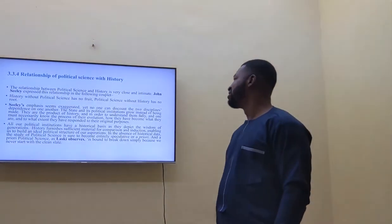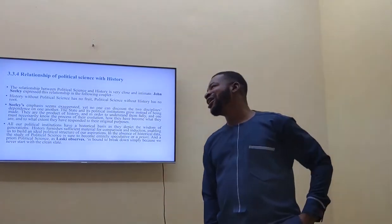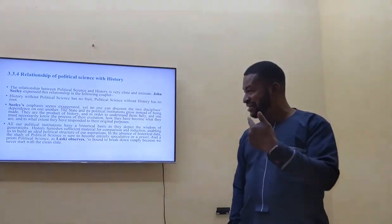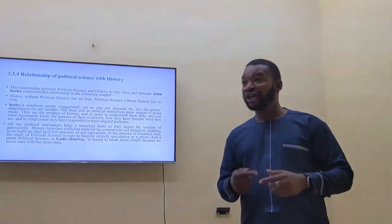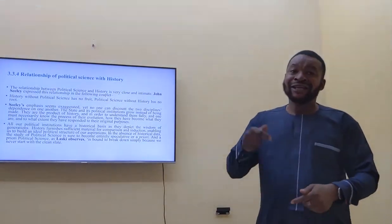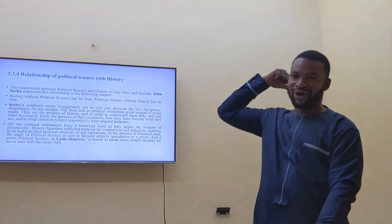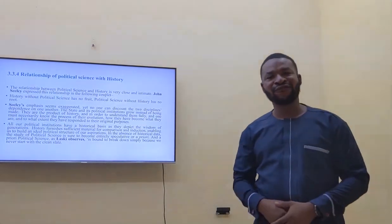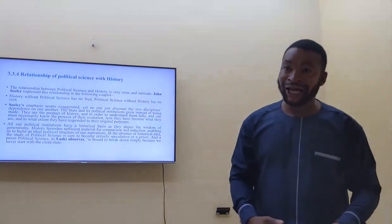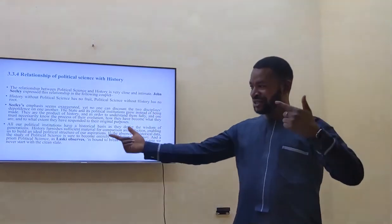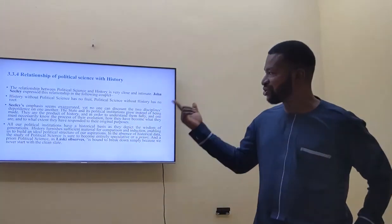Relationship of political science with history: as we established, the scope of political science covers the study of history — what has been placed in the past. That is where history comes in. If you must study political science, it is important that you have a grounding in history, hence the relationship between political science and history.